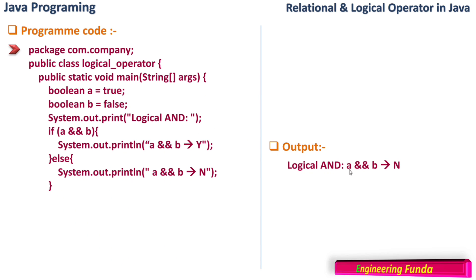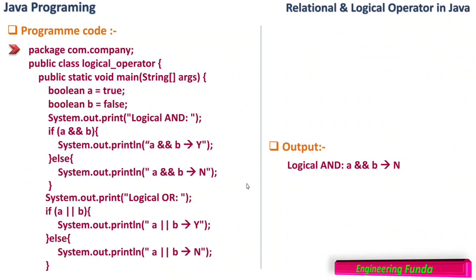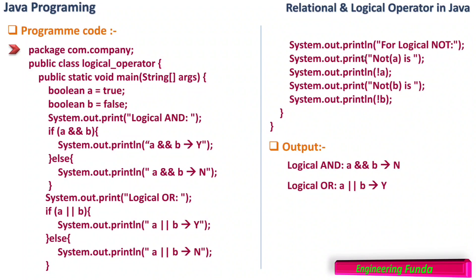The output for logical AND confirms: 'a and b is false'. For logical OR, a || b means true OR false. Since a is true, OR says the result is true. It goes inside the if block and prints 'a or b tends to true'. The output for logical OR shows 'a or b tends to true'.